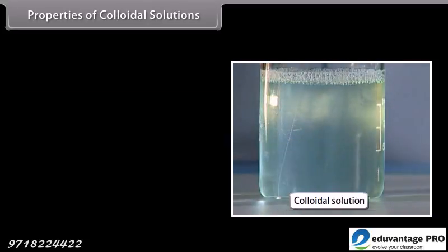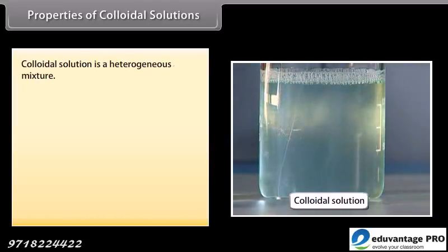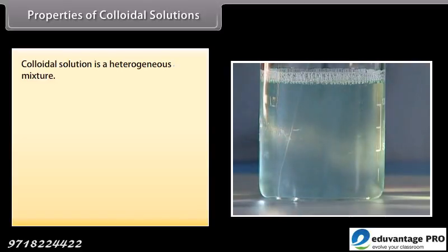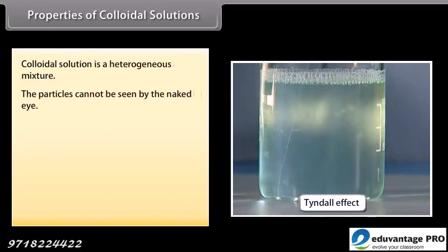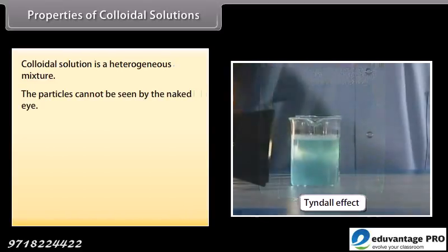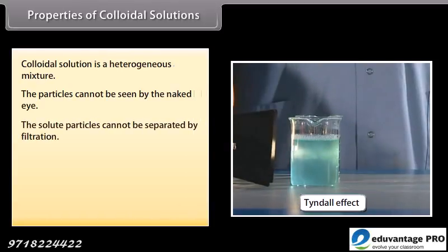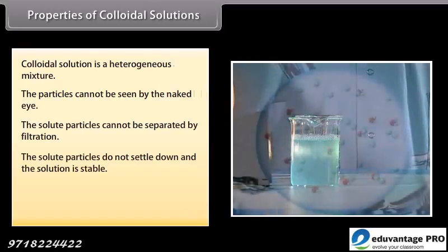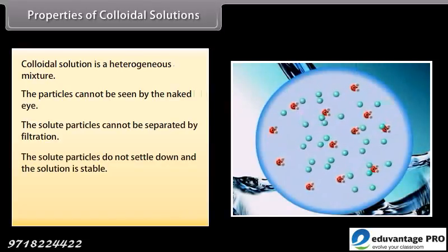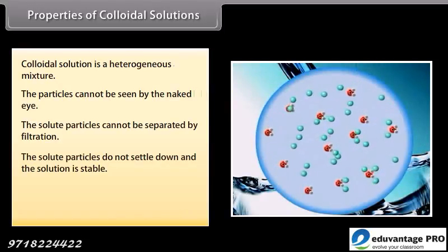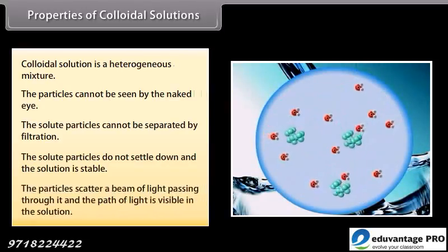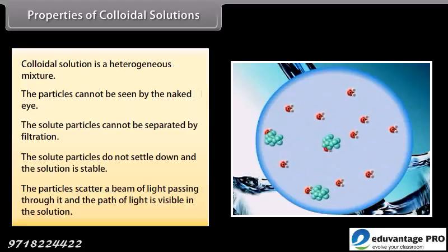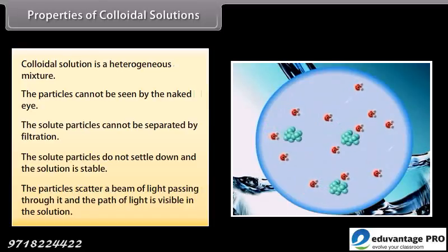Properties of colloidal solutions: A colloidal solution is a heterogeneous mixture. The particles cannot be seen by the naked eye. The solute particles cannot be separated by filtration. The solute particles do not settle down, so the solution is stable. The particles scatter a beam of light passing through it, and the path of light is visible in the solution.